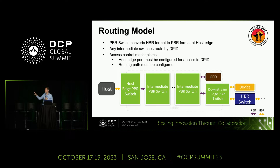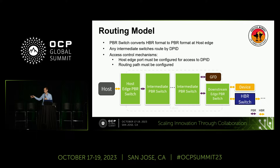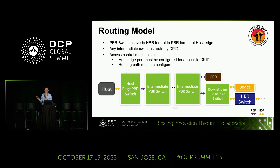The access control mechanisms defined to ensure this only happens in an appropriate way: the host edge port has to be configured to access a particular DPID. So as long as we can trust that switch, we can trust it's not sending traffic to a device it has not been explicitly configured to access. When we get into the switch, it's a less granular access mechanism, but a routing path also needs to be established. In very large fabrics, it's possible you can't reach everywhere from everywhere, so all those intermediate PBR switches need to be configured to route properly to the DPID.